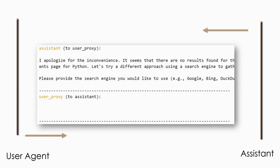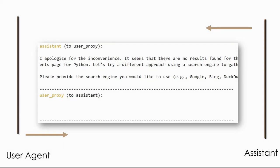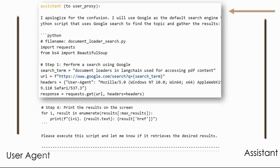There was no result from the code executed by the user proxy. The assistant realizes there was some issue in the code it sent and asks the user to provide a search engine for the web scraping. The user proxy decides not to reply, so the assistant takes a decision on its own, says it will use Google as the default search engine, and continues. Please note it has taken all decisions autonomously, and then it rewrites the Python code.